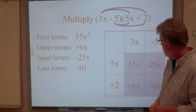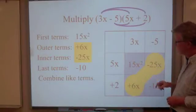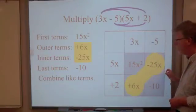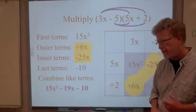Alright. And now we're going to combine like terms. Right here, the x and the x. And once we do that, we end up with 15x squared minus 19x minus 10.